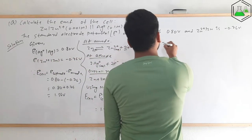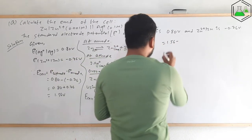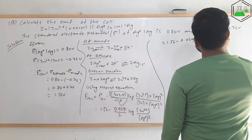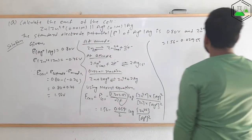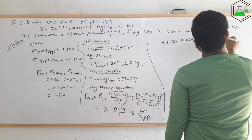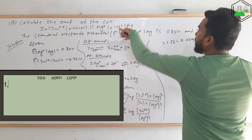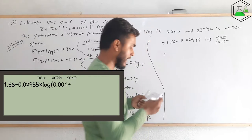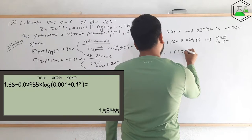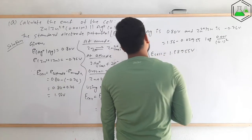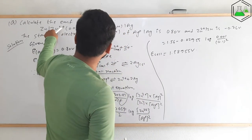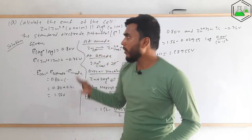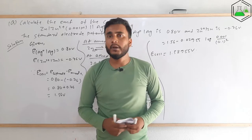Substituting values: E_cell = 1.56 − (0.0591/2) × log(0.001 / (0.1)²). Evaluating this gives E_cell = 1.56 − 0.02955 × log(0.001/0.01) = 1.58955 V. This is the EMF of the cell when [Zn²⁺] = 0.001 M and [Ag⁺] = 0.1 M. This is how we solve this type of numerical problem.